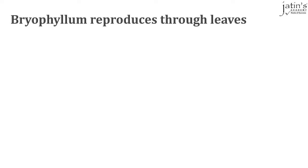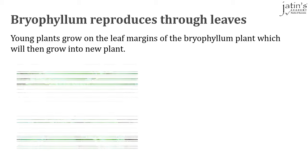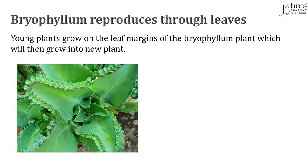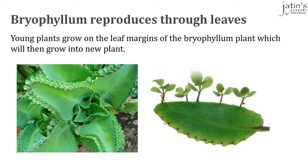Bryophyllum on the other hand reproduces through leaves. Young plants grow on the leaf margins of the bryophyllum plant, which will then grow into a new plant. Here we can see tiny small young plants growing on the leaf margins of a bryophyllum.